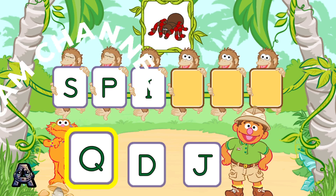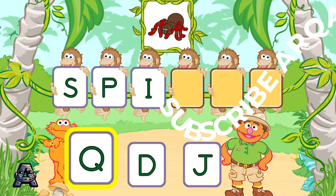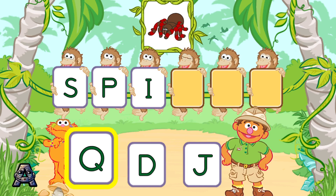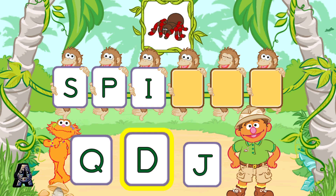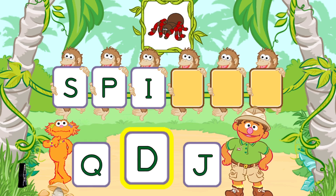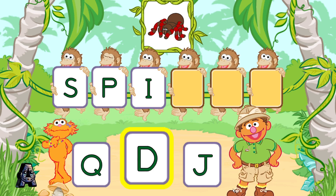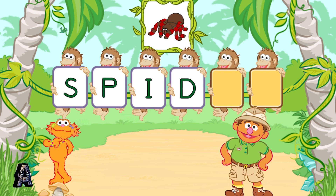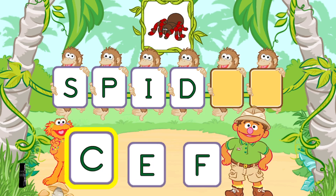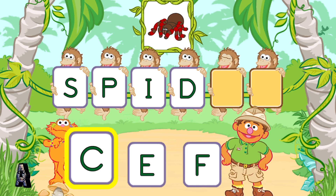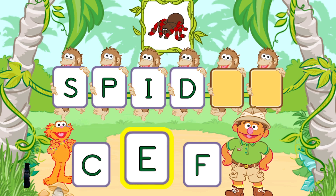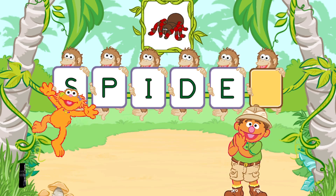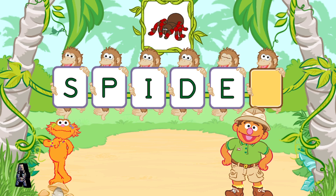Next, pick the letter D. If you want to pick this letter, jump or press the T button. That was great! D is the next letter in the word spider. Next, pick the letter E. Way to go! E is the next letter in the word spider.